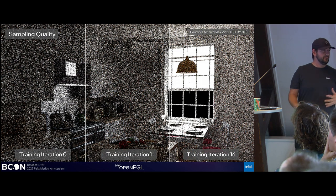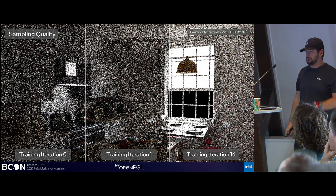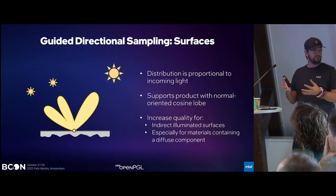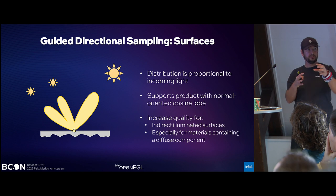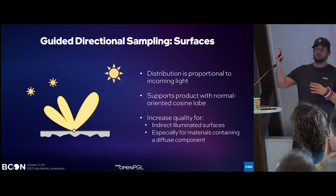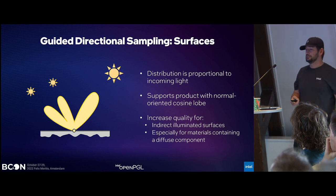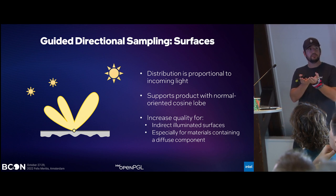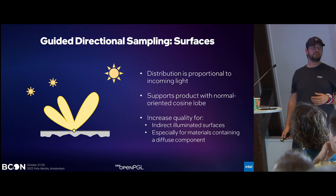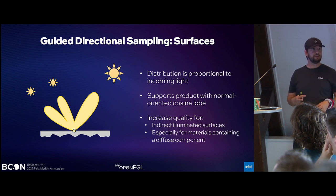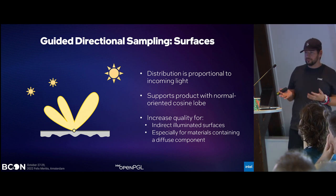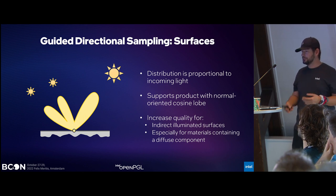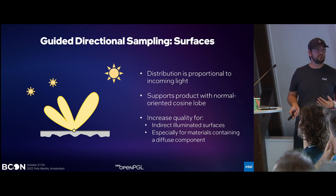How do we make the sampling better by having an approximation of the incoming light at each point? For surfaces, we can directly query at each point an approximation of the incoming light — it tells you where the important indirect and direct light directions are. You can then use this to generate a sampling distribution. On a diffuse surface, you can even multiply it with the cosine lobe, giving you an almost perfect sampling decision for materials with diffuse components. This is really useful especially on indirectly illuminated surfaces and for diffuse materials.